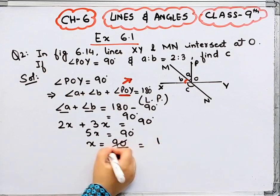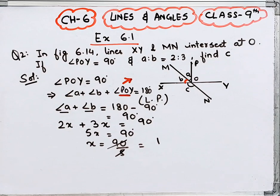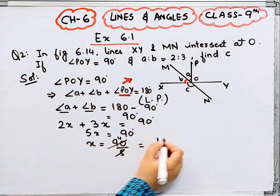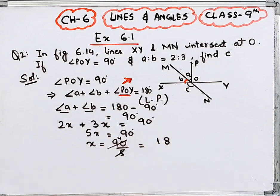5, 1 is 5. 90 will be 4, 5, 8 is 40, 18 degrees.